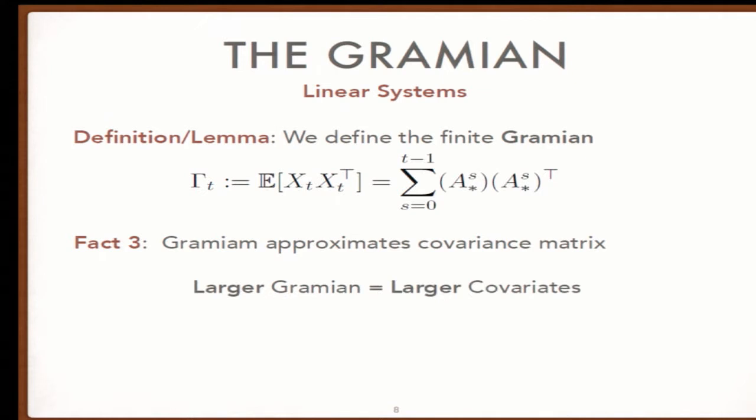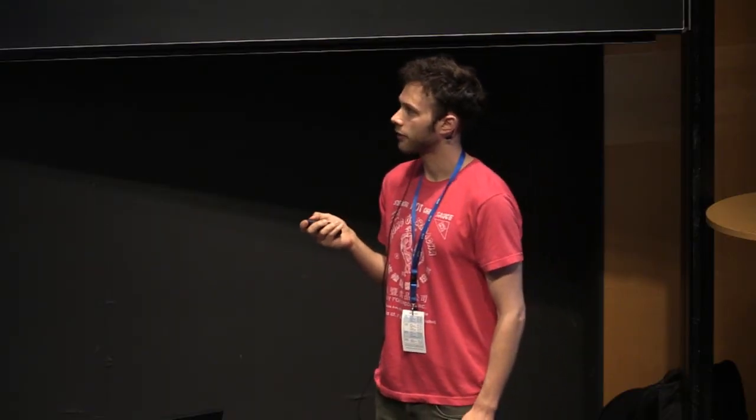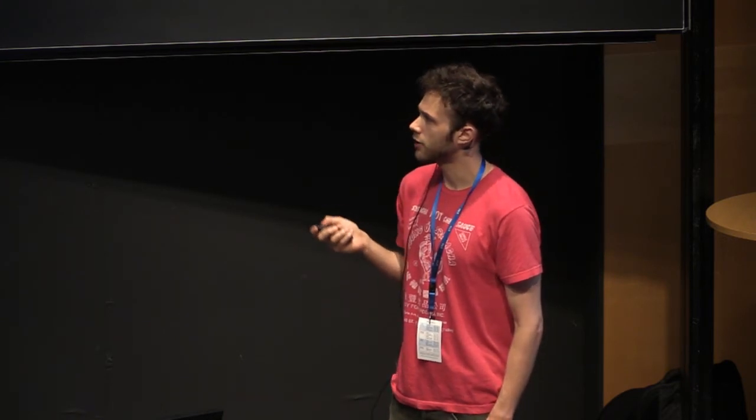The Gramian also approximates the covariance matrix. If you have a larger Gramian, you have larger covariates and more signal—higher SNR, because we're not changing the noise, just the covariance size. So you should expect faster learning rates with a larger Gramian, not slower ones. Even though larger Gramians may mix more slowly, they provide more signal.